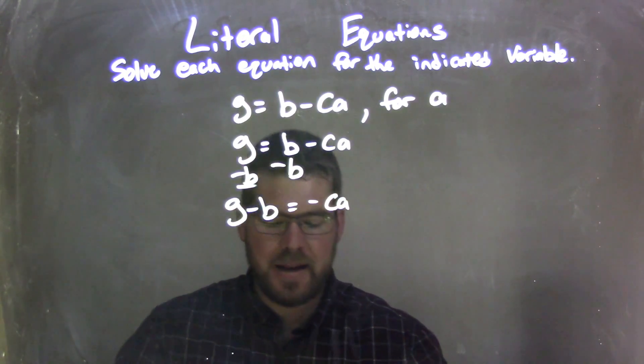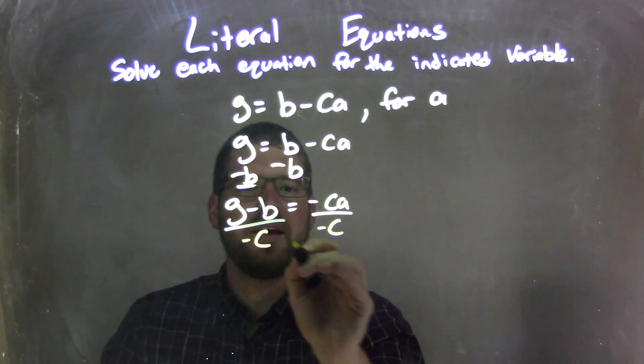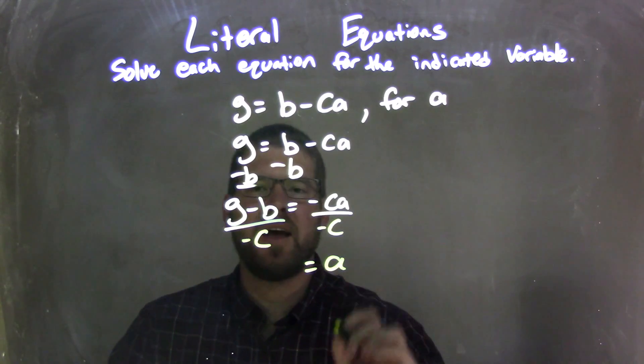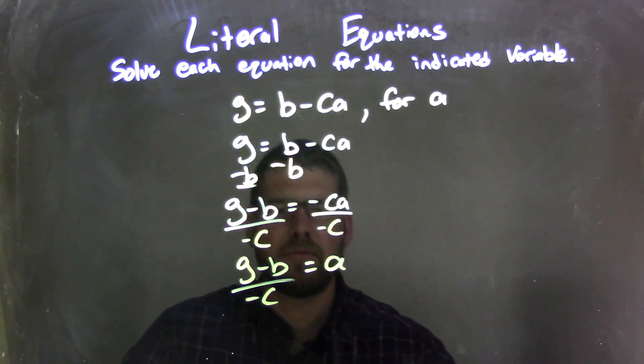Then I need to divide by negative C. Divide by negative C to both sides, and that leaves me with just a positive A on the right, and I have G minus B over negative C on the left.